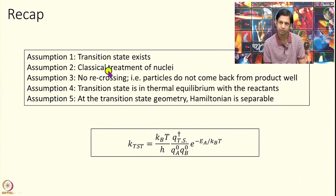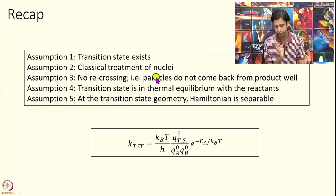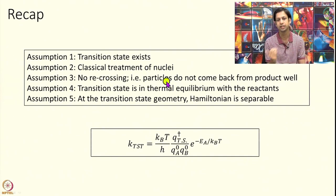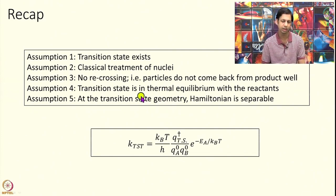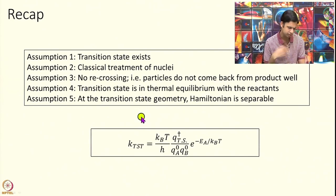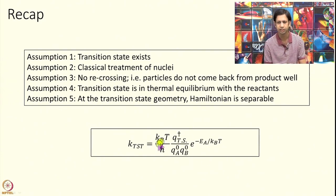The second approximation is that we treat nuclei classically. Third, there is no recrossing — we look at the positive flux only, sitting at the transition state and looking at all particles moving forward without anything coming back. Fourth, we assume the transition state is in equilibrium with the reactants. Finally, we assume separability of the Hamiltonian along the reaction coordinate and all other coordinates. Under these 5 assumptions this relation was derived last module.